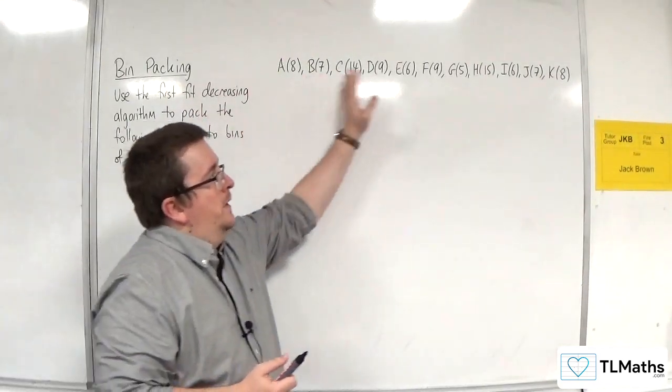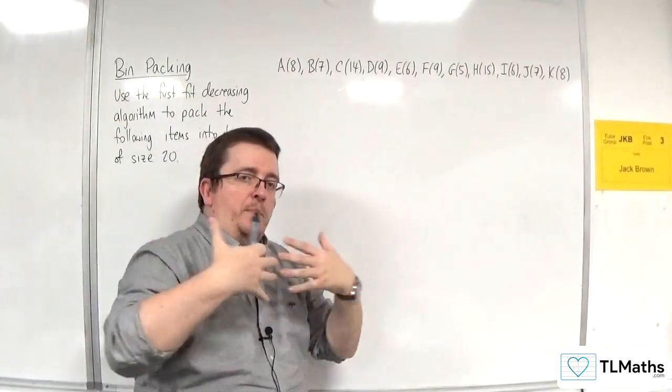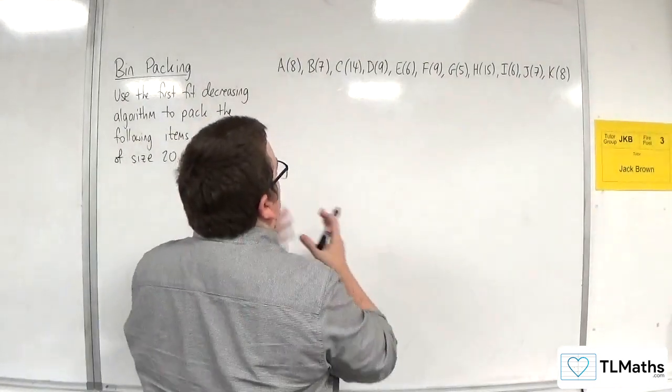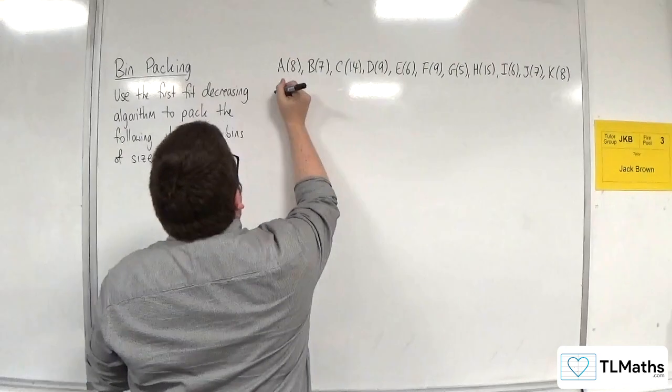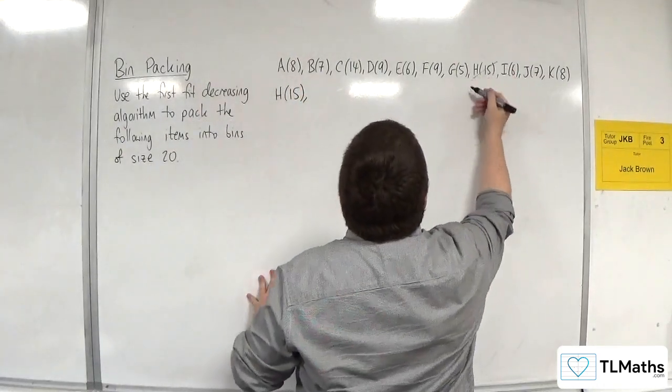So, let's say I, first of all, go through sorting algorithm. I get the computer to sort all these numbers into order. So, I'm going to write them down directly. So, we've got H, 15, being the largest. Okay, so we've got that one done.